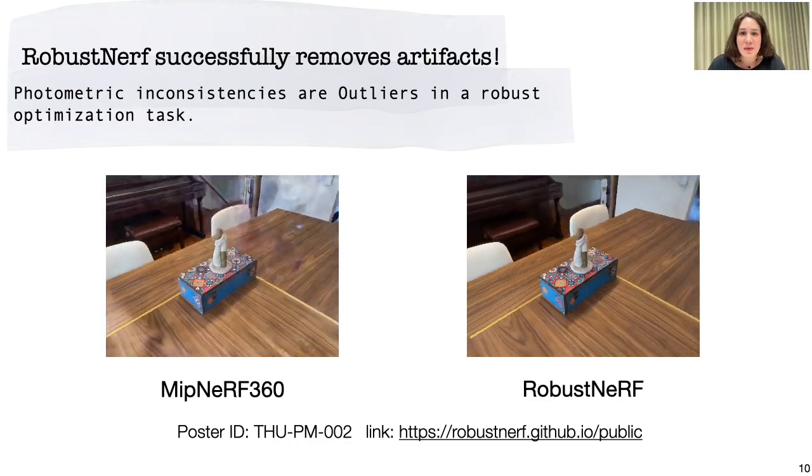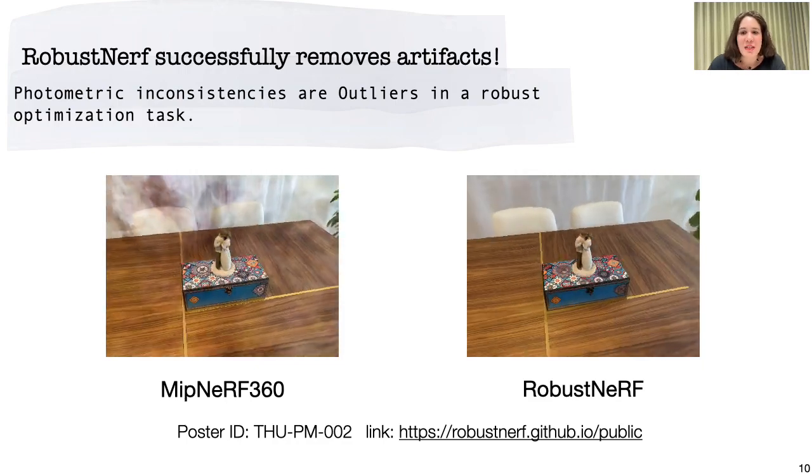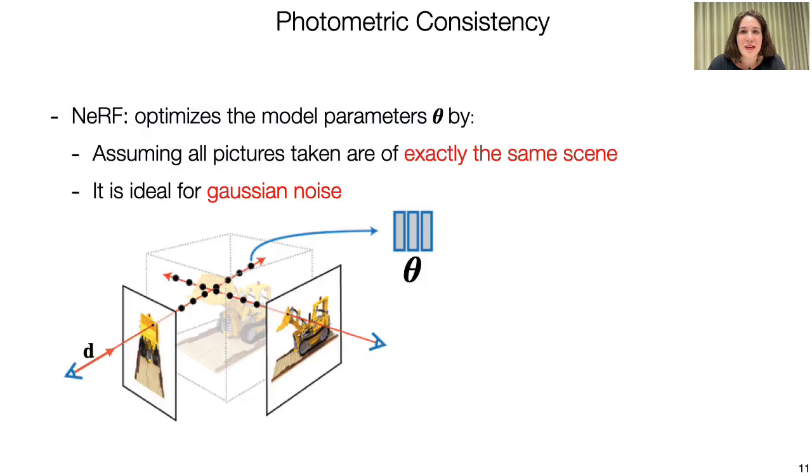Now, let me do a deeper dive and explain some of the details. NeRF training tries to find a 3D world that explains the images up to an IID Gaussian noise. Therefore, if the noise is structured like a transient object, it has to fabricate a weird anomalous 3D world.